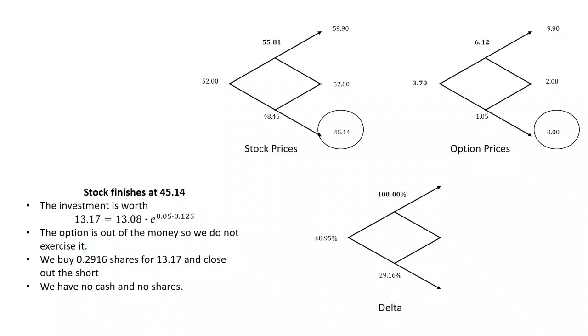Now, we also learned how to build a four-step tree, or an eight-step tree, or a thousand-step tree. As long as we are rebalancing this delta hedge every step through the tree, we will always end up neither making nor losing money if we bought the option at fair value.